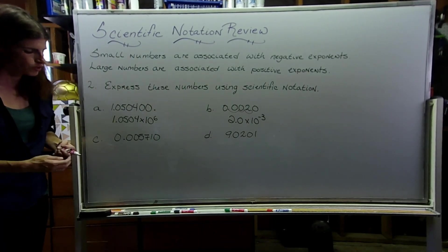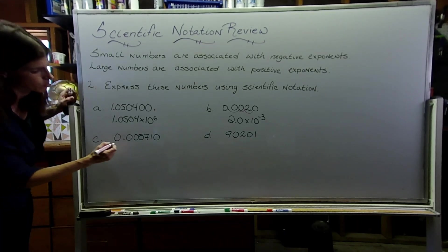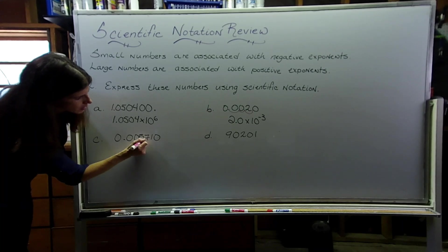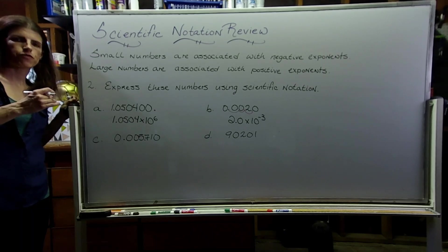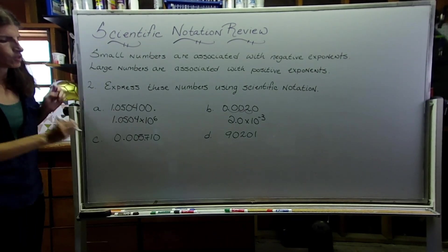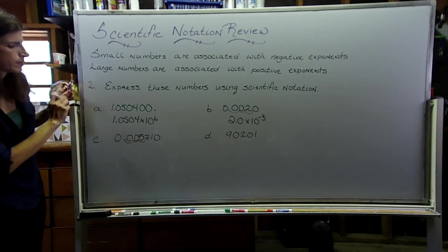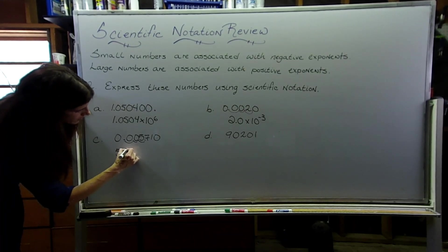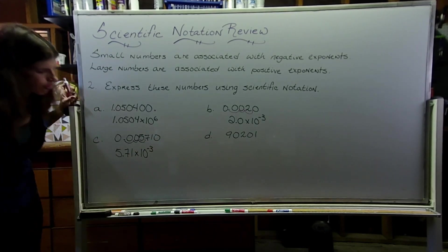On letter C, we have another really small number. So I know that it's going to have a negative exponent. And let's see, I need my decimal place to be right here, between the 5 and the 7. So I can have that standard format, the number, point, whatever. So I'm going to need to move it 1, 2, 3 spots. And then I can rewrite this as 5.71 times 10 to the negative third.